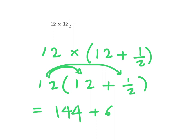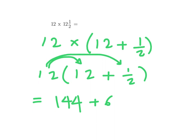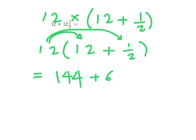Okay, now when I add these two, 144 plus 6 is 150. And voila, I'm done. So 12 times 12 and a half is 150.